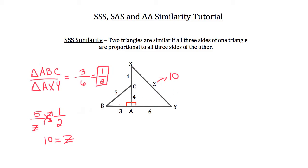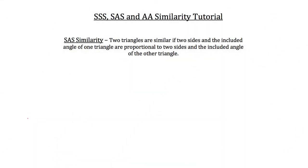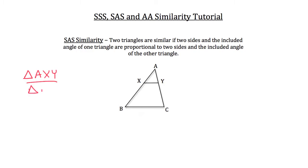Now let's take a look at Side-Angle-Side similarity. Two triangles are similar if two sides and the included angle of one triangle are proportional to two sides and the included angle of the other triangle. For example, we have triangle ABC and triangle AXY, and we're told that triangle AXY is similar to triangle ABC. Given some side lengths and one missing side length Z, how could you solve for Z? First, establish a proportion by comparing two known side lengths.